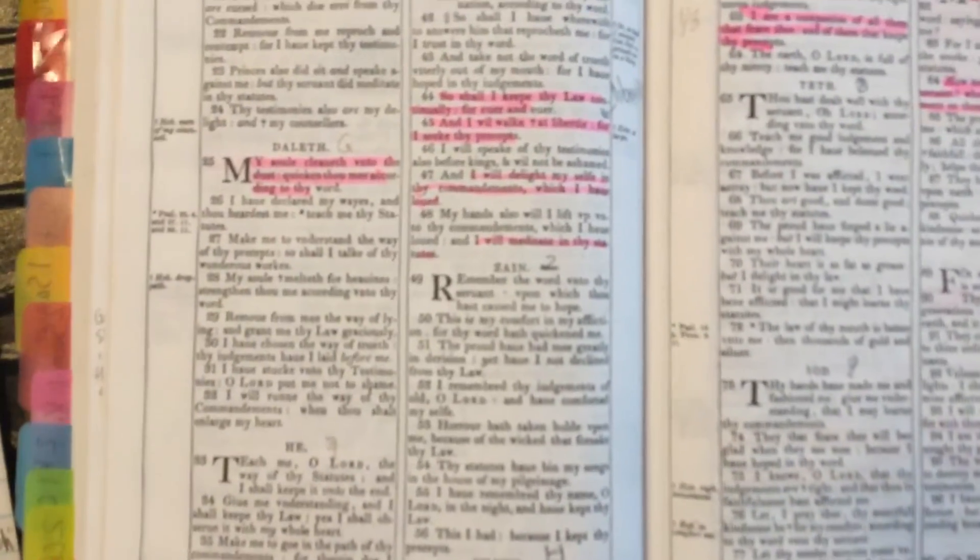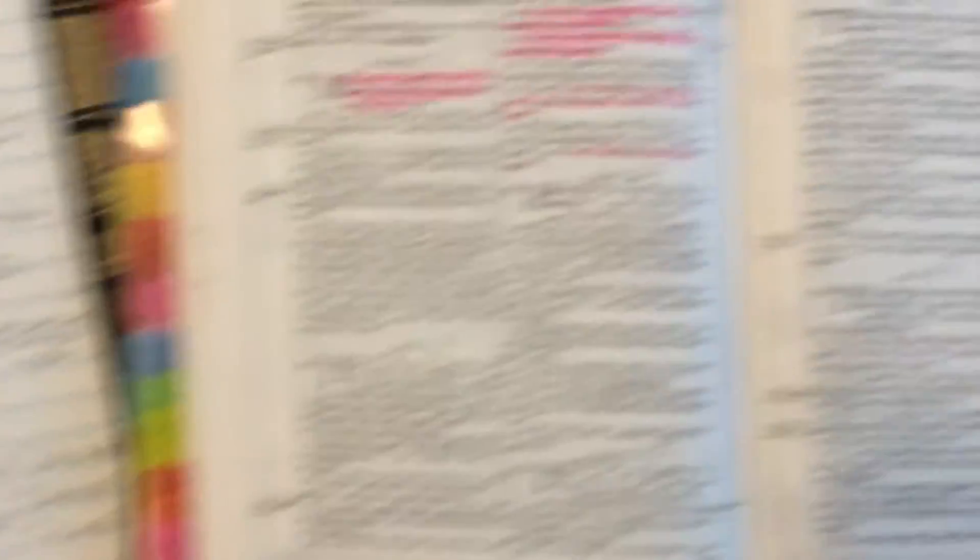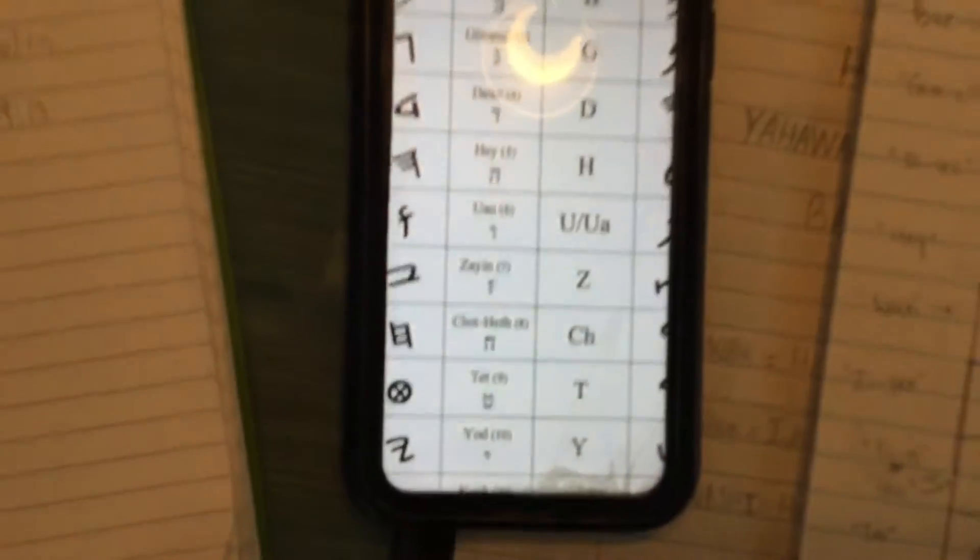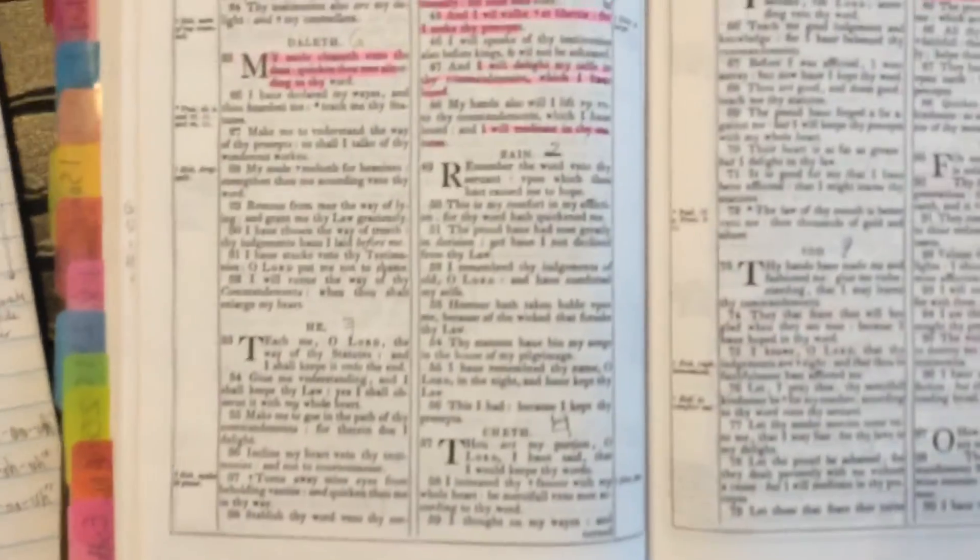Zayin, right? Zayin, Z-A-I-N. Look at that, Zayin, it's the same thing. Psalms, like King David, look what he did man, he left a cheat code.